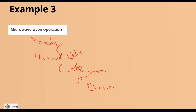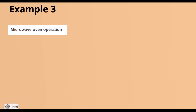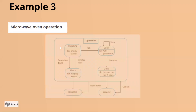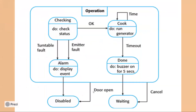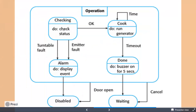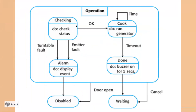When you open the door, the microwave is in a disabled state and performs no work. When the operation starts, you check the status of the item. Once status is checked, you run the generator and start the timer. When the timer runs out, you turn the button — it beeps for about 5 seconds. Then you wait for the door to open, and when it opens, you take the item out.